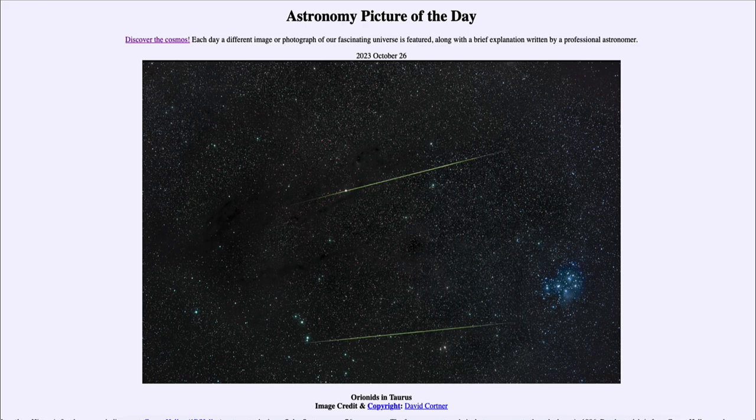So that was our picture of the day for October 26th of 2023. It was titled Orionids in Taurus. We'll be back again tomorrow for the next picture previewed to be 2P/Encke. So we'll see what that is about tomorrow. Until then, have a great day everyone, and I will see you in class.